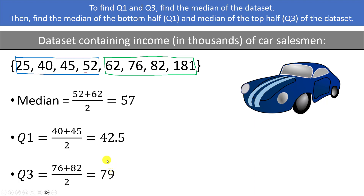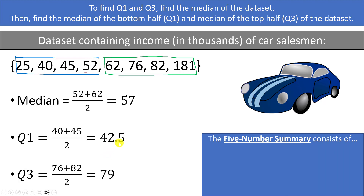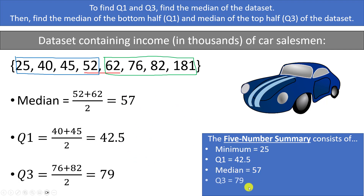In addition to the median, Q1, and Q3, we can also consider the minimum and maximum of the data set to get what is called the five-number summary. This is just five numbers that summarize a data set: the minimum is 25, Q1 is 42.5, the median is 57, Q3 is 79, and the maximum is 181. If you know these five numbers, you know a lot about the spread of the data set.